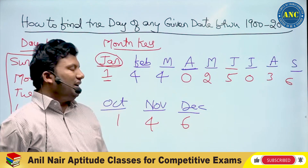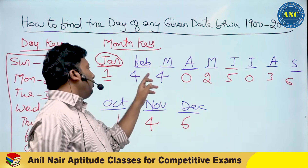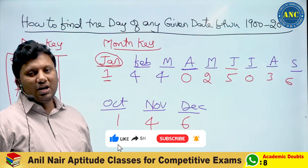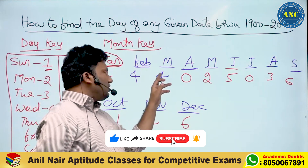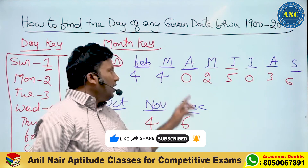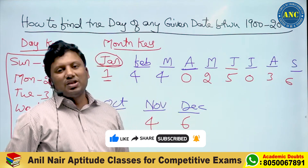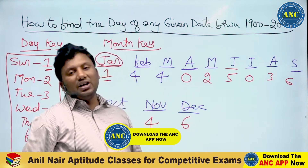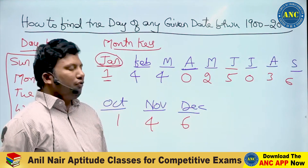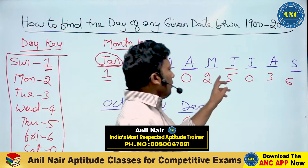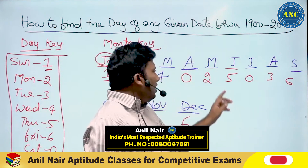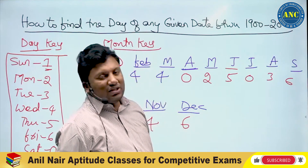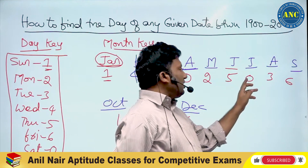March contains 31 days: remainder 3, so 4 plus 3 equals 7, which is 0. April 30 days: remainder 2, so it is 2. May contains 31 days: remainder 3, so 2 plus 3 equals 5. June contains 30 days: 30 divided by 7, remainder 2, so 5 plus 2 equals 7, which is 0. The month key values are: 1, 4, 4, 0, 2, 5, 0, 3, 6, 1, 4, 6.